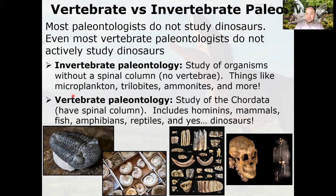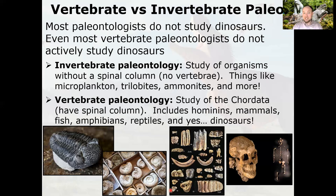The other branch is vertebrate paleontology — the study of chordates, animals with spinal columns. This includes hominins, mammals, fish, amphibians, reptiles, and yes, dinosaurs. A vertebrate paleontologist at University of Buffalo studied Miocene mice — rodents, examining teeth in Kansas. A lot of vertebrate paleontology involves looking at teeth because teeth are very hard and resilient, showing up frequently in the fossil record. But even among vertebrate paleontologists, most don't study dinosaurs — so when you encounter a paleontologist, it's quite likely they don't study dinosaurs.